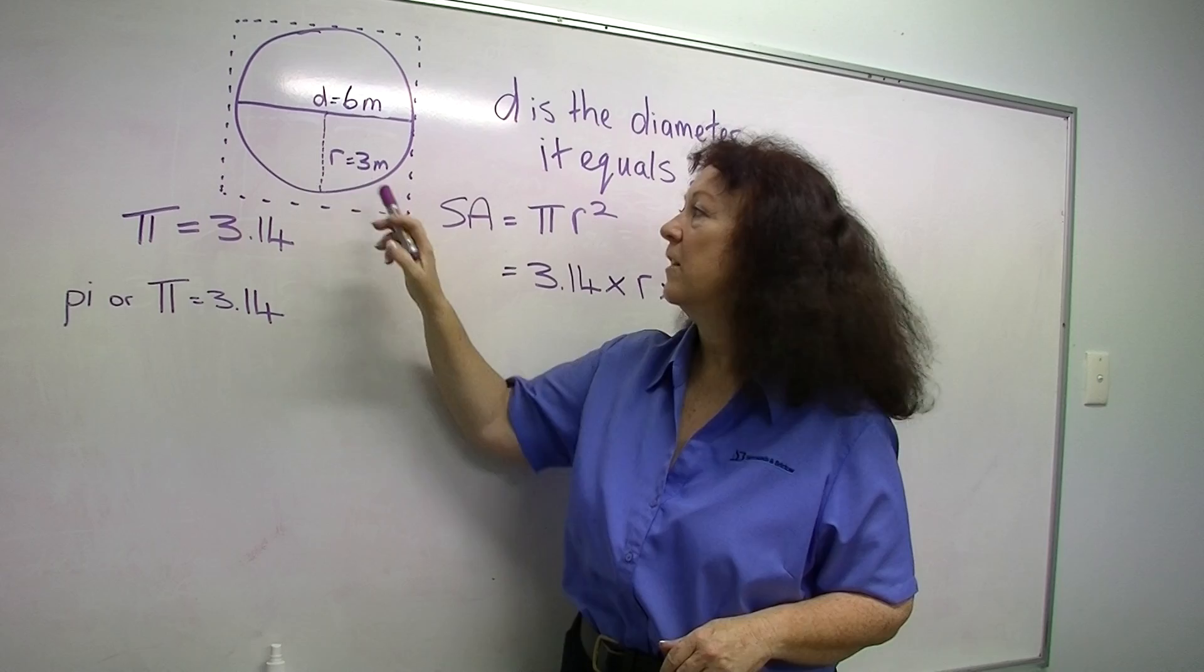So in this case, the radius of our tank is 3 metres.